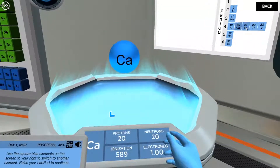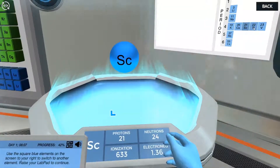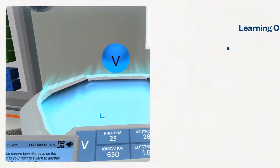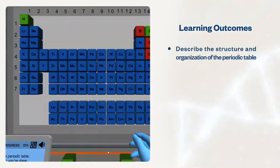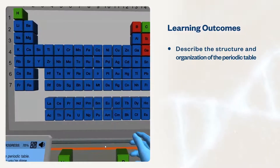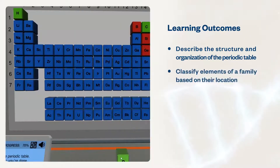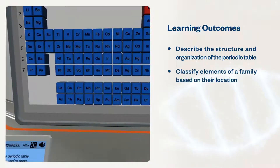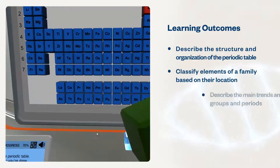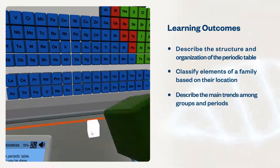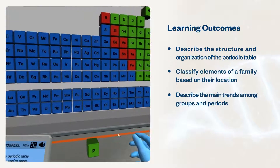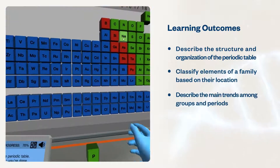These simulations will help students describe the structure and organization of the periodic table, classify elements of a family based on their location in the periodic table, and describe the main trends among groups and periods for atomic properties.